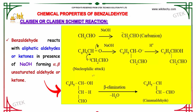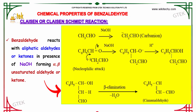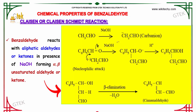Claisen-Schmidt reaction: When benzaldehyde reacts with aliphatic aldehydes or ketones in the presence of sodium hydroxide, it forms alpha or beta unsaturated aldehydes or ketones. This occurs because of nucleophilic attack followed by beta elimination reactions.